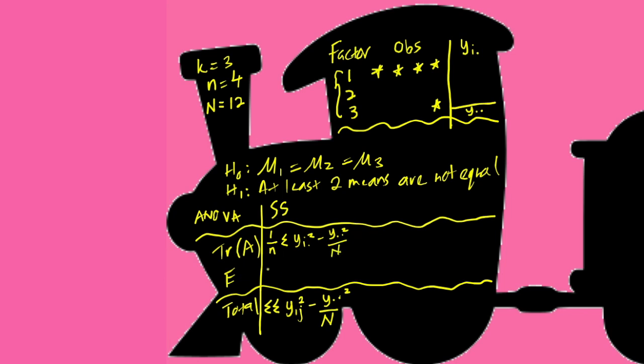And the sum of squares of the error would simply be SST minus SS A.